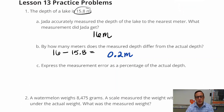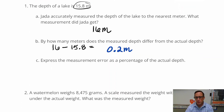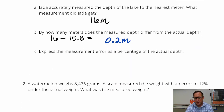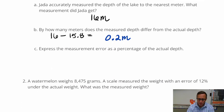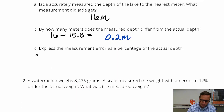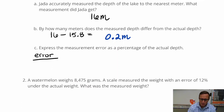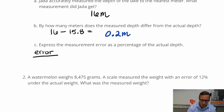Now for C, we're ready to wrap it all up. We've got to express the measurement error as a percentage of the actual depth. What we're going to do is take the amount of error over the actual measurement and multiply that by 100.